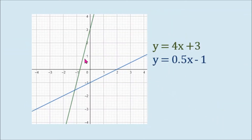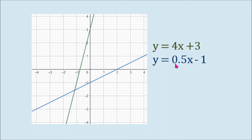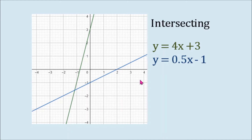I have here two lines. The green line has the equation y equals 4x plus 3. Its slope is 4 and its y-intercept is 3. The blue line has the equation y equals 0.5x minus 1. Its slope is 0.5 or one half and its y-intercept is negative 1. This is an example of a system of linear equations whose lines are intersecting. They intersect at one point, and therefore it has one solution.